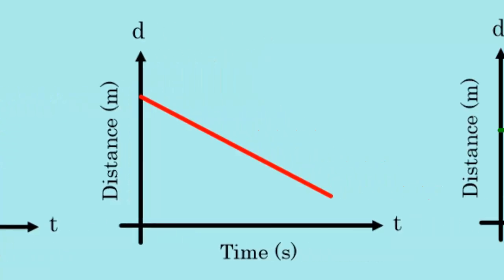The red graph sort of has an opposite relationship. As time moves forward, the distance away grows shorter. So our line is moving downwards.